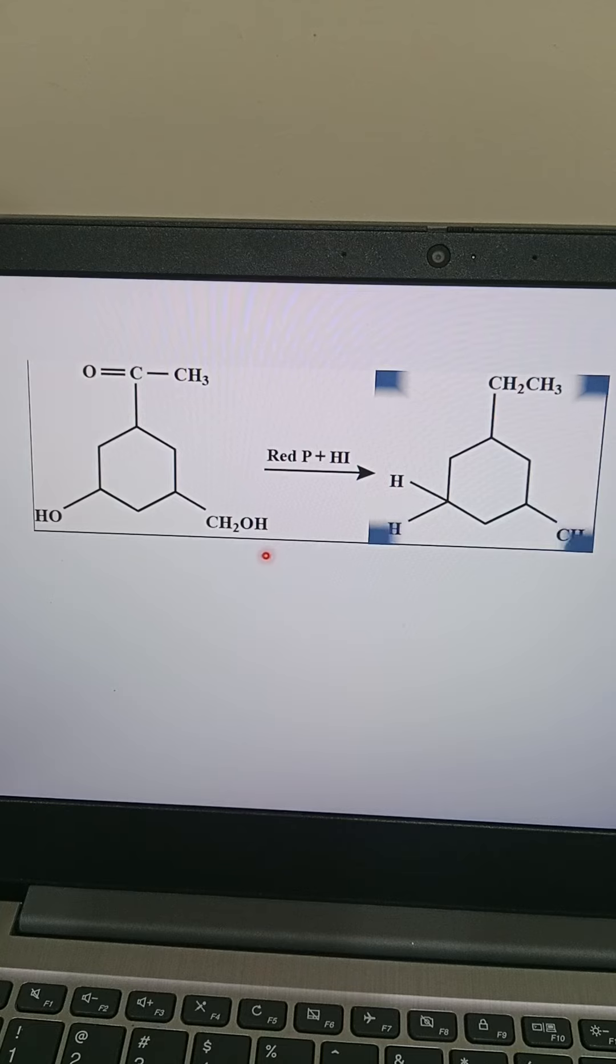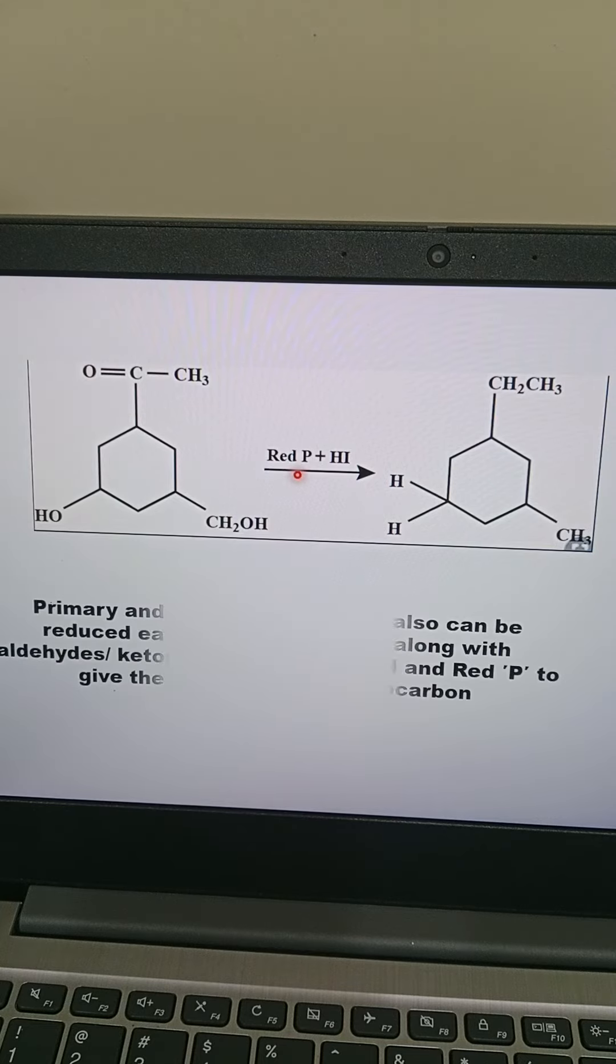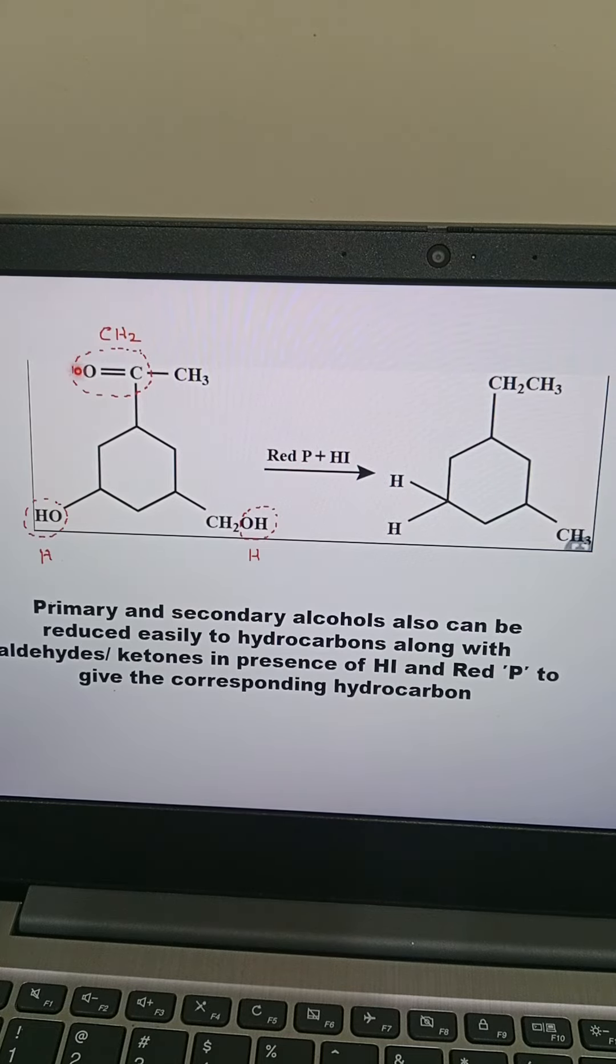So when we treat with red phosphorus and HI, all these groups get reduced. So C double bond O is reduced to CH2. So we are getting ethyl here.